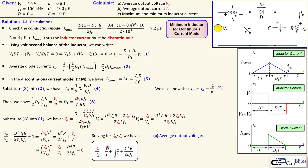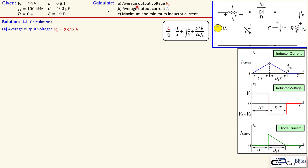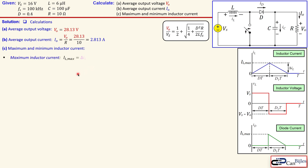Now calculating the average output voltage using this formula and substituting all known values including VS = 16 V gives VO = 28.13 volts. For the average output current, using Ohm's law IO = VO over R = 2.813 amps. For the maximum inductor current, since in DCM it equals the peak-to-peak value given by the known expression, substituting the duty cycle and other known values gives IL_max = 10.67 amps.